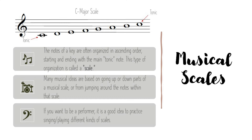Once you've determined what you want your musical key to be, the next step is to organize the notes in the key into what we call a musical scale. The notes are often organized in ascending order, starting and ending with that main center of gravity tonic note. Many musical ideas are based on going up or down parts of a musical scale or jumping around the notes within that scale. So if you want to be a successful performer or songwriter, it's usually a good idea to spend some time practicing singing or playing different kinds of scales on your instrument.